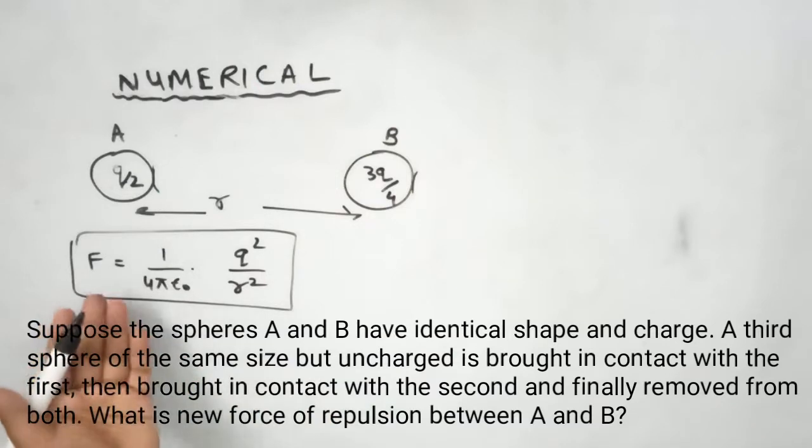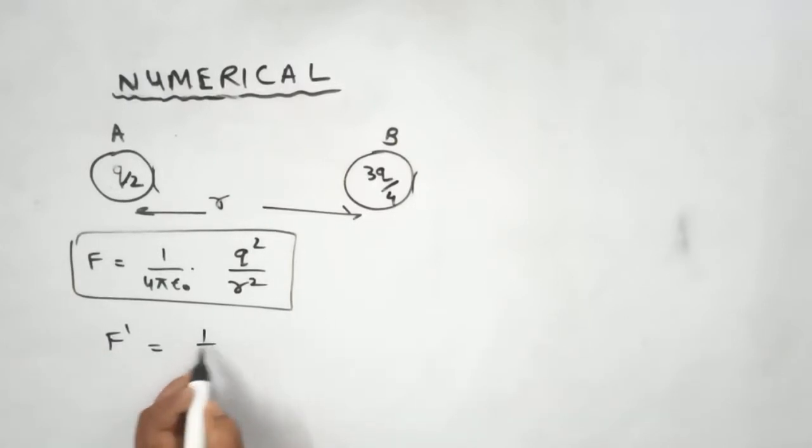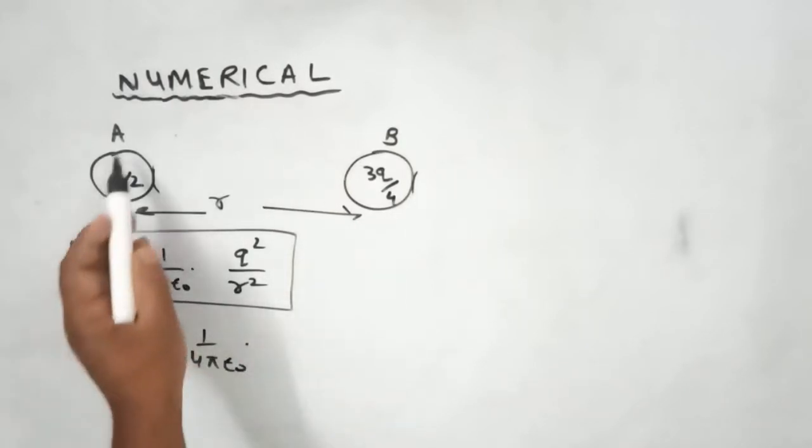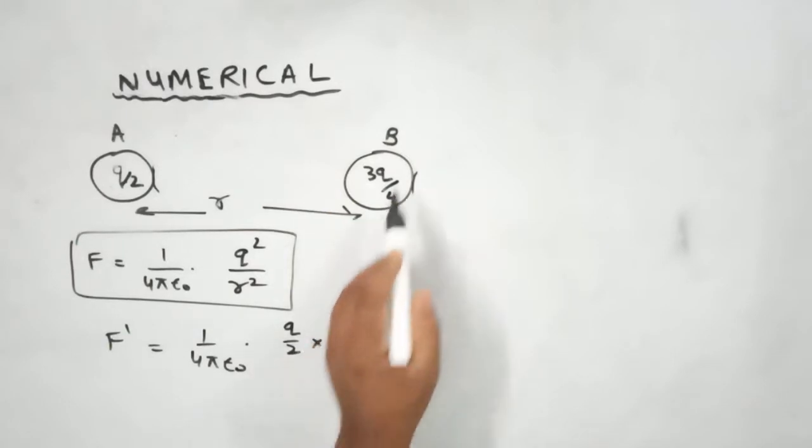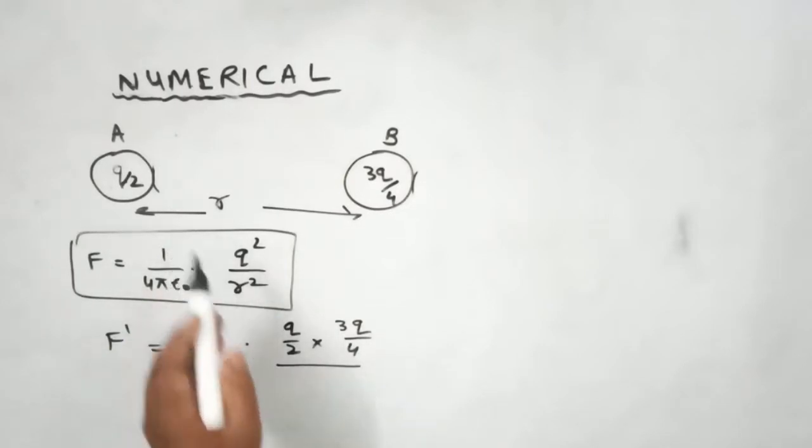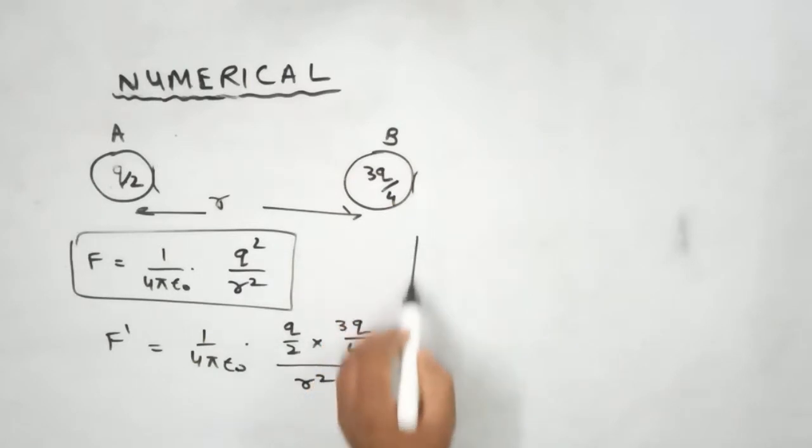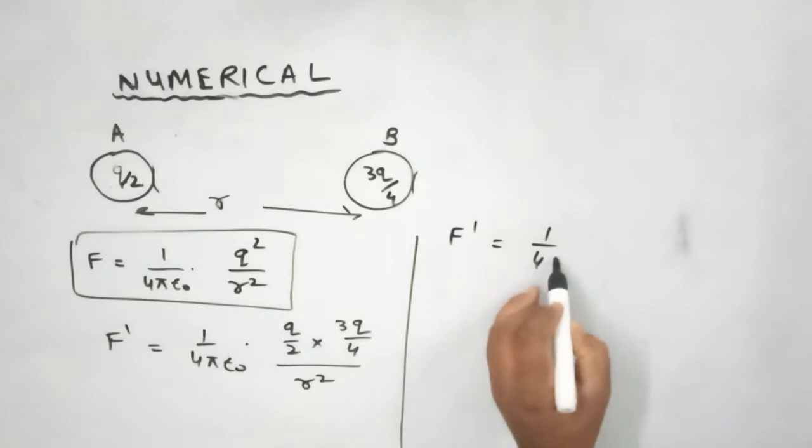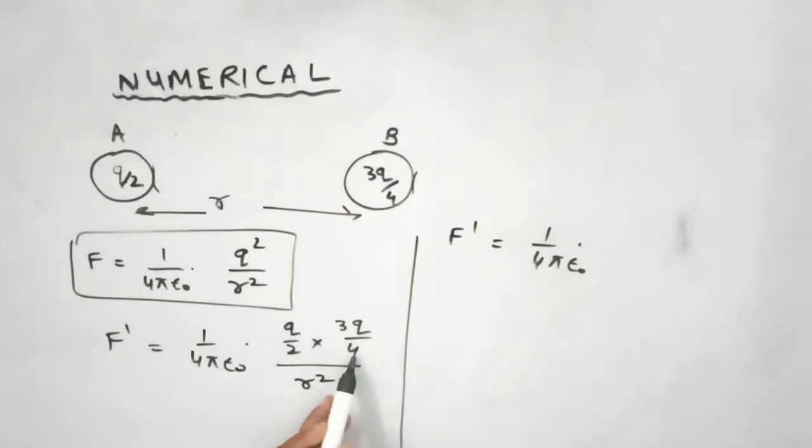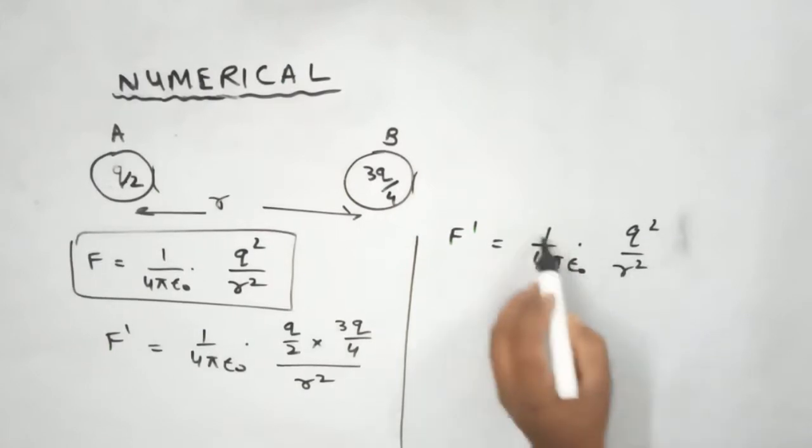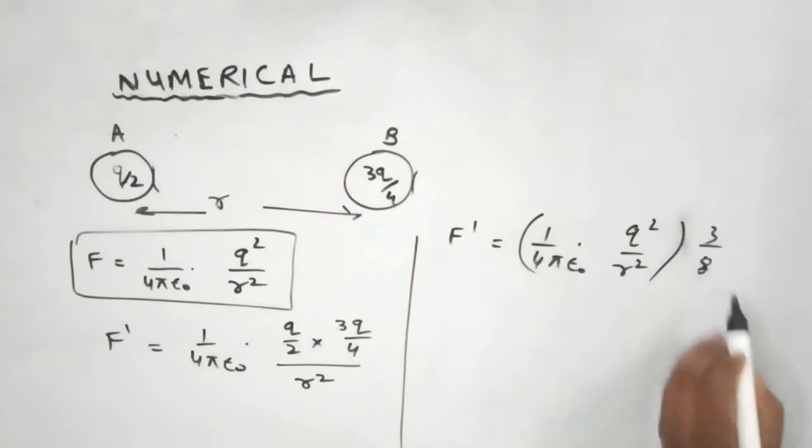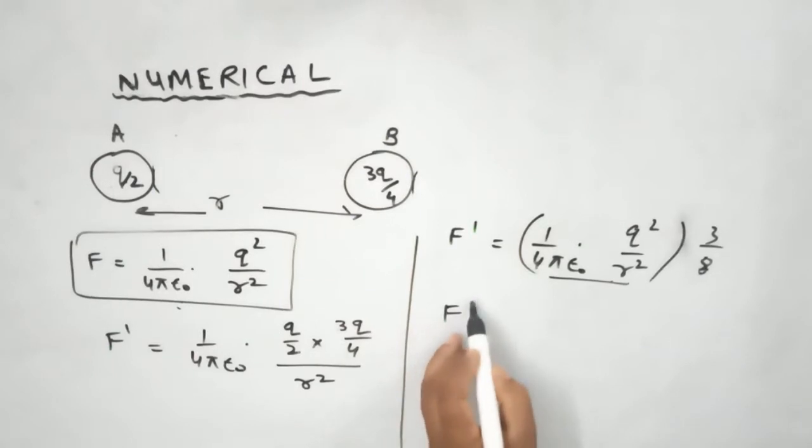Now let's see the new force, that is F dash. F dash equals 1 upon 4 pi epsilon naught, Q1 - sphere A has charge Q upon 2, sphere B has charge 3Q upon 4, divided by R square. We can write F dash equals 1 upon 4 pi epsilon naught, 2 and 4 multiply gives 8, so 3 by 8, Q square upon R square. This becomes 3 by 8 times this equation. So F dash equals 3 by 8 F. The new force is 3 by 8 times the old force, meaning it has reduced.